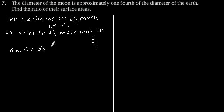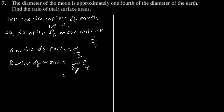Radius of earth will be d by 2, and radius of moon will be one by two into d by four, which is equal to d by eight.